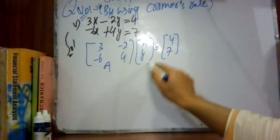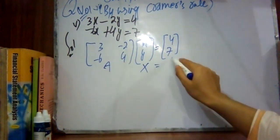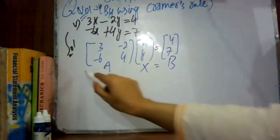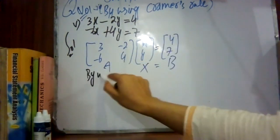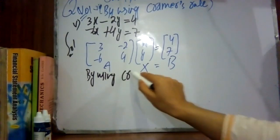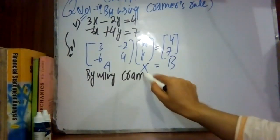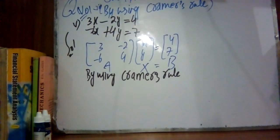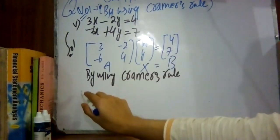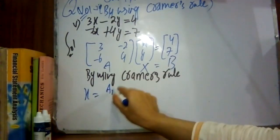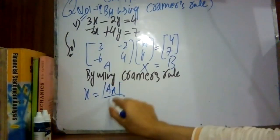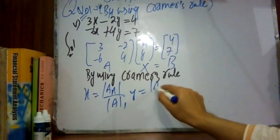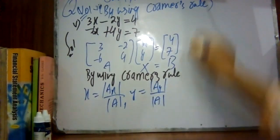This matrix is A, the unknowns are capital X, and this matrix is B. Now by using Cramer's Rule, x equals determinant of Ax divided by determinant of A, and y equals determinant of Ay divided by determinant of A.